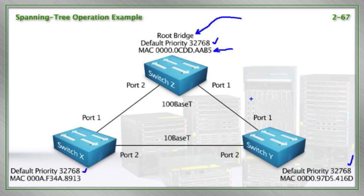Switch Z is the king of the hill. Switch Z is the root bridge. Now, what is the second part of this equation?